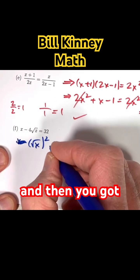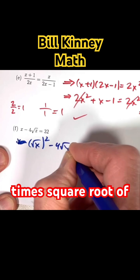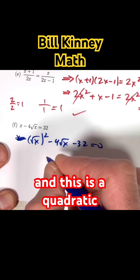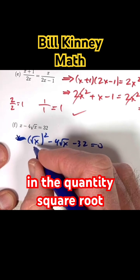This would be the same as x. And then you've got minus 4 times square root of x and then minus 32 equaling 0. And this is a quadratic in the quantity square root of x.